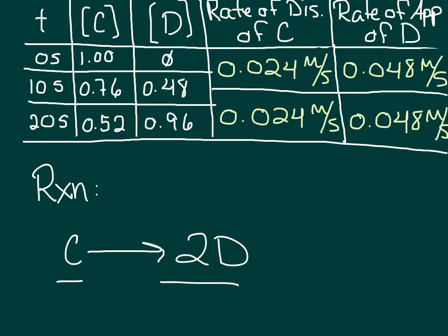These are what you should have found for the rates of disappearance of C and the rate of appearance of D during both time periods between 0 and 10 seconds and 10 and 20 seconds. There are a couple of interesting things about what you should have found. First notice that in this case, the rate of disappearance of C is not the same as the rate of appearance of D, like it was in the previous equation.